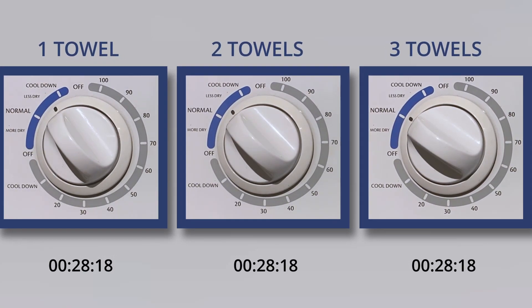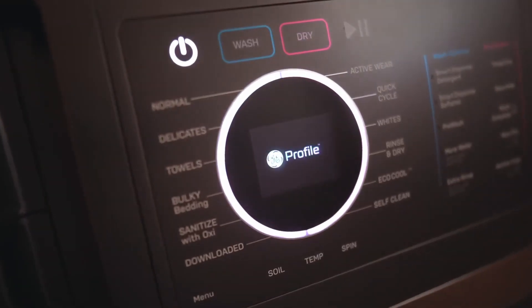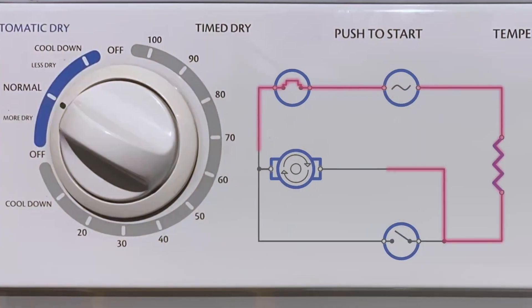Do you ever wonder how your dryer knows when the laundry is done? The obvious answer is to use a moisture sensor, and if you have a modern dryer with these metal strips that require cleaning, you'd be right.